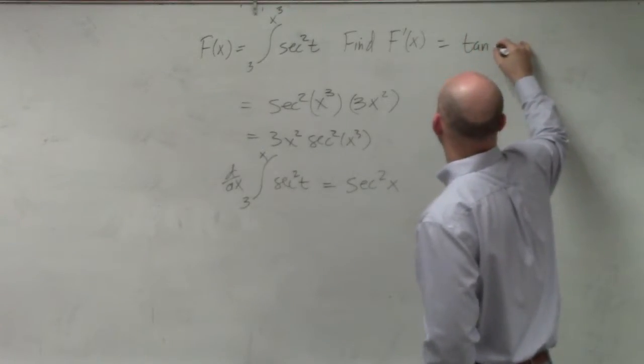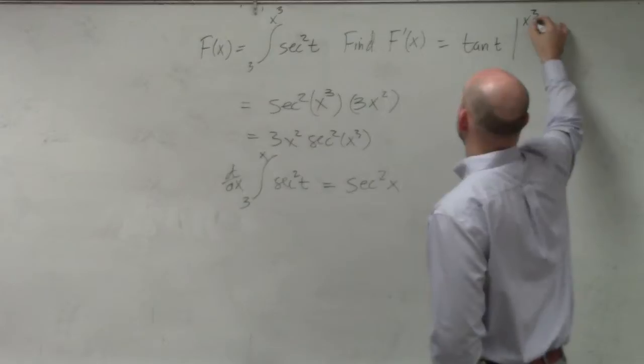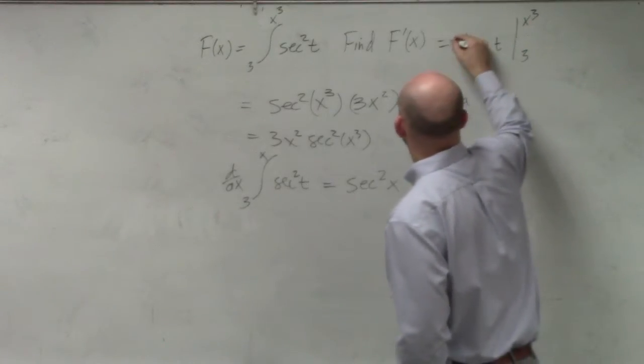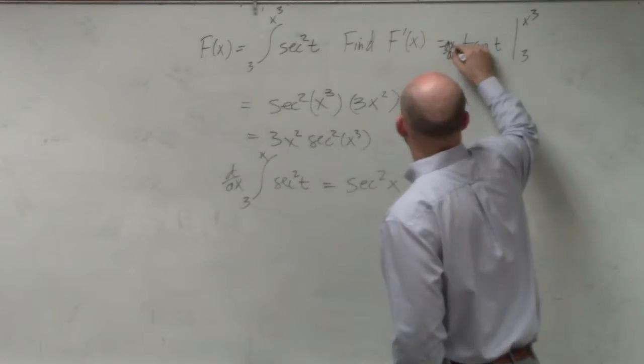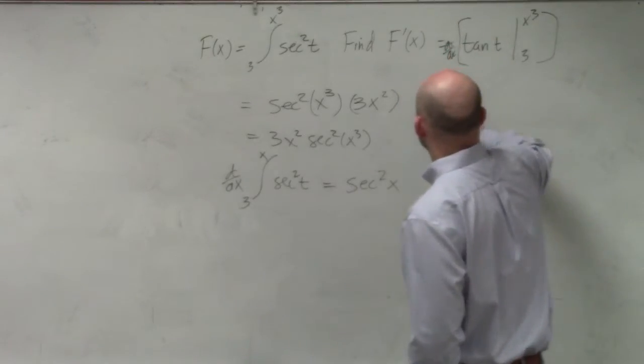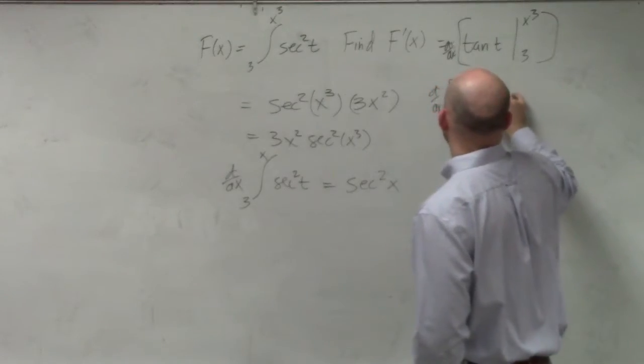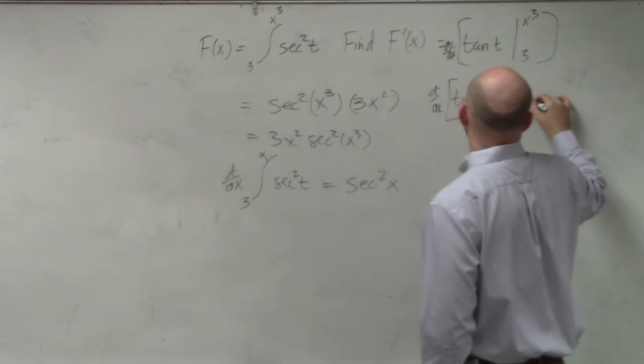that's tangent of t from x cubed to 3. And then we say, OK, now d over dx. So now we say, all right, d over dx of tangent of x cubed minus tangent of 3.